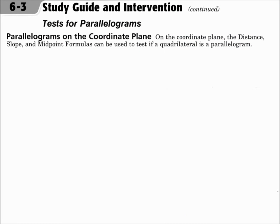Sometimes you work with parallelograms on the coordinate plane. On the coordinate plane, you can use the distance formula to find side lengths, the slope formula to see if sides are parallel, and the midpoint formula to see if the diagonals bisect each other. All of these can test whether a quadrilateral is a parallelogram.